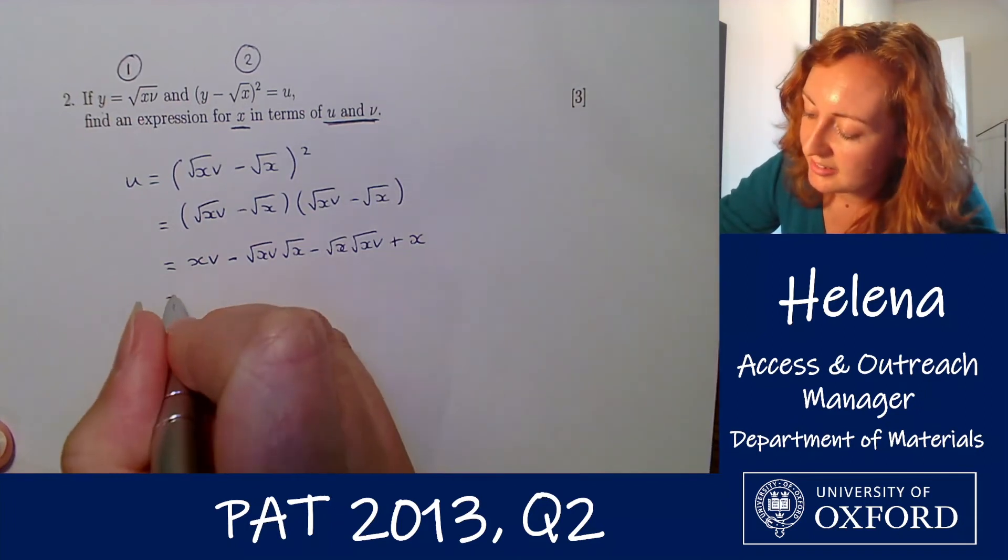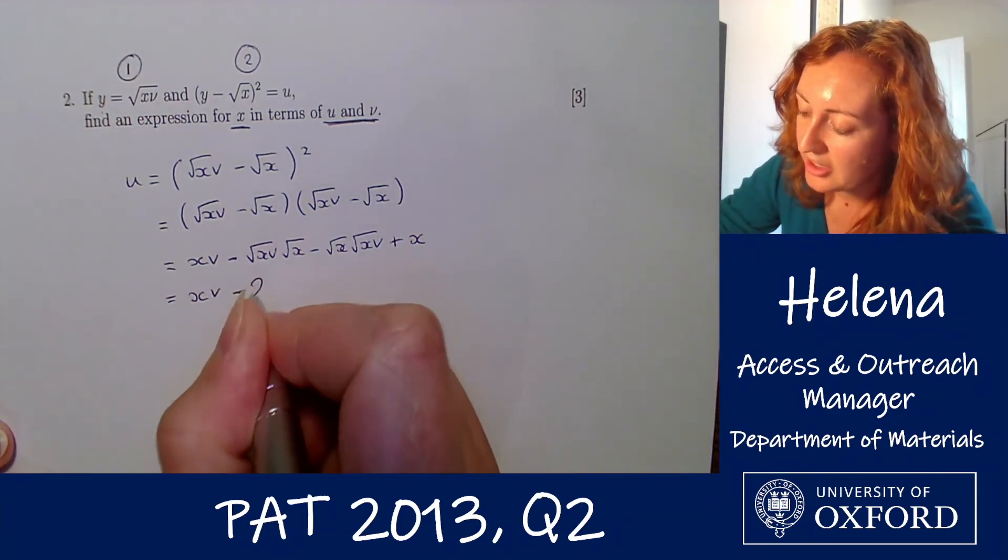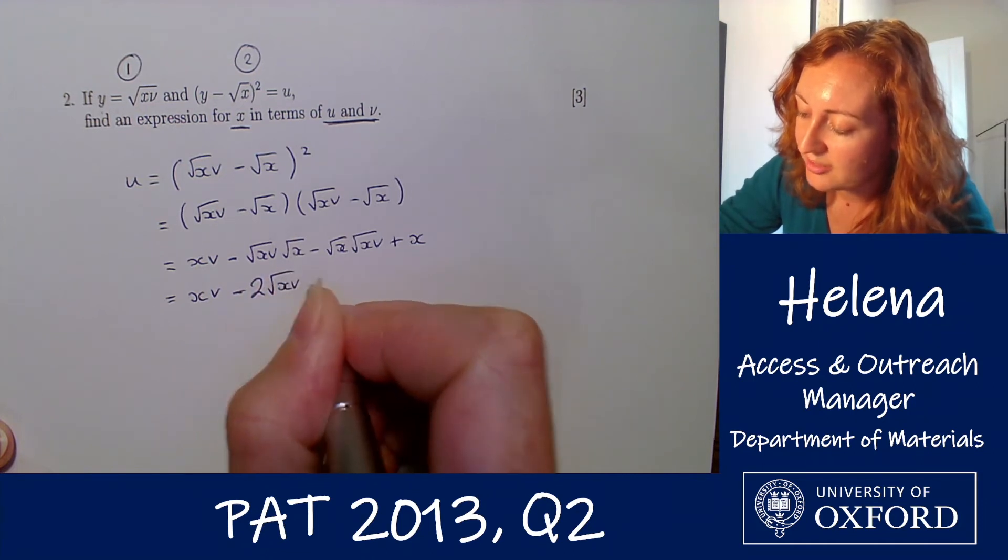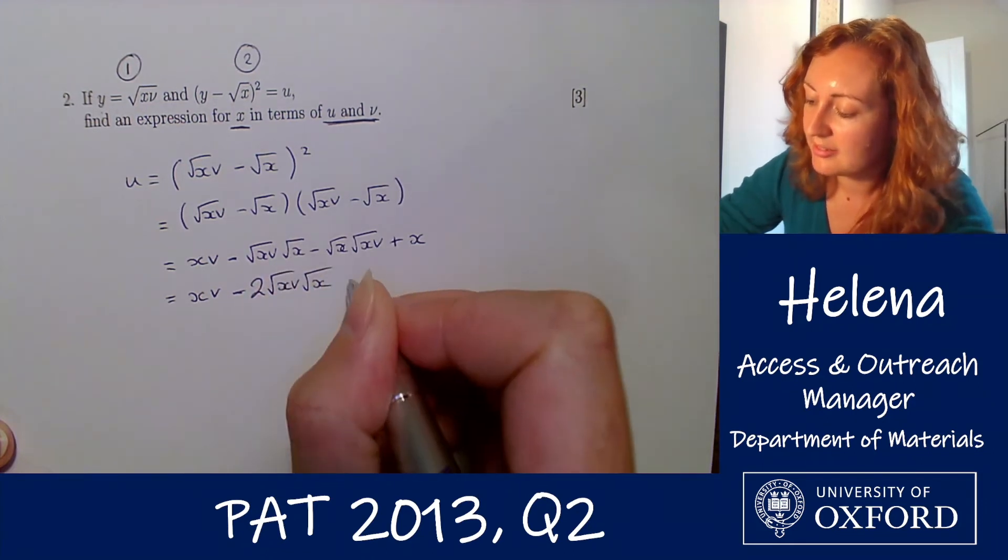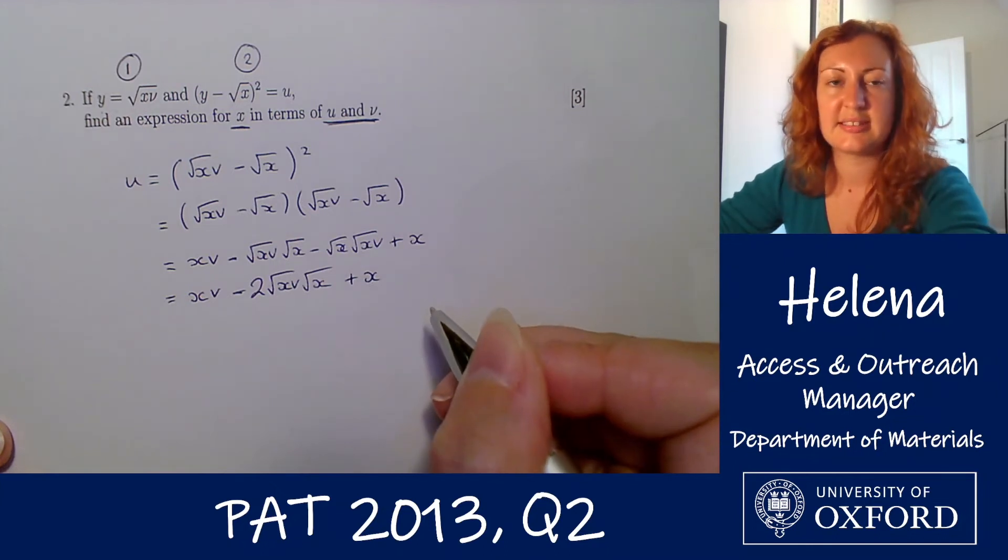So let's gather the terms here. So we have an x v here minus two root x v times root x plus an x at the end here.